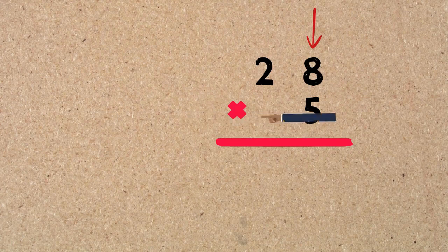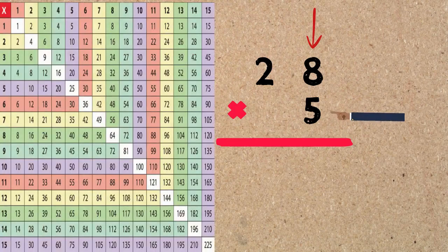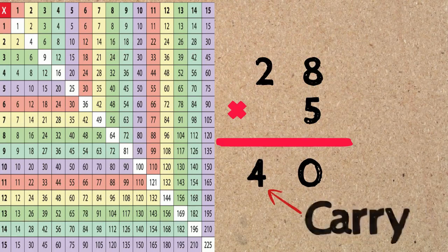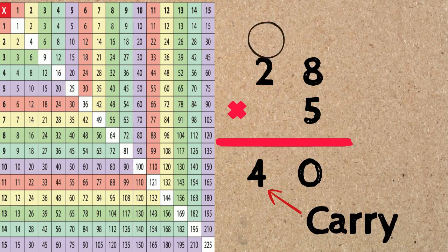5 times 8 — and if I don't know my answer, I can always use a multiplication table to find it. From the multiplication table, I worked out that 5 times 8 equals 40. Just like we do with addition, when we get a two-digit answer, we carry the first digit on the left, which is 4, to the top of the next column.